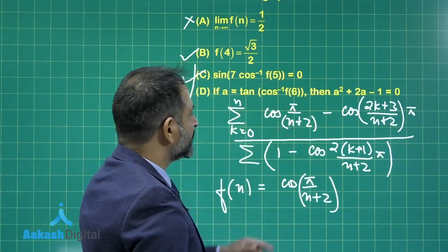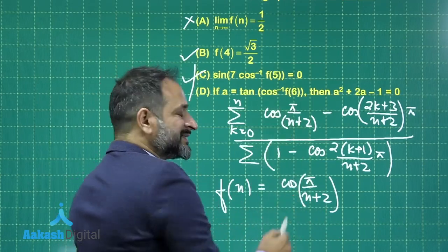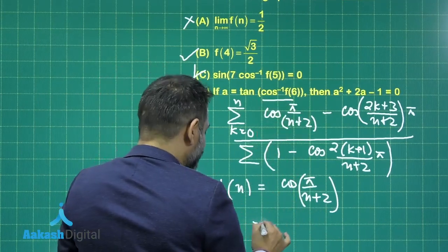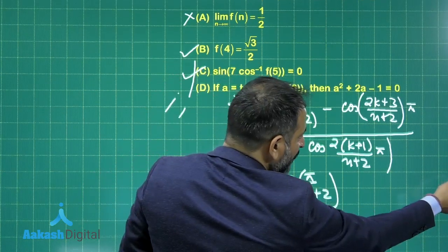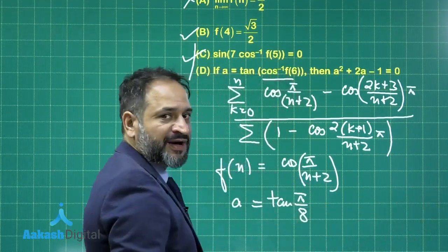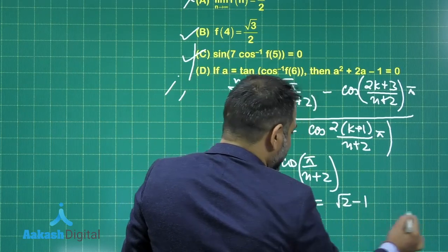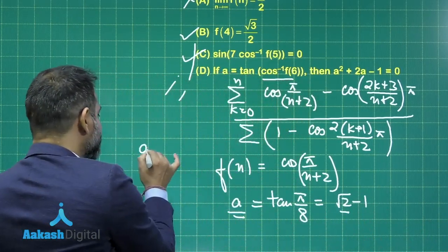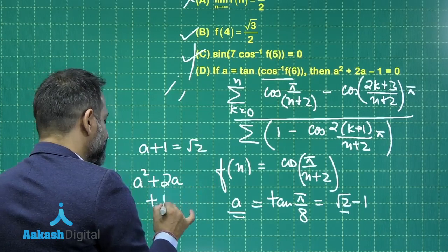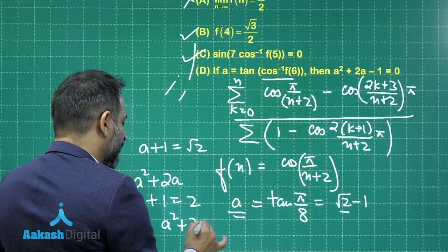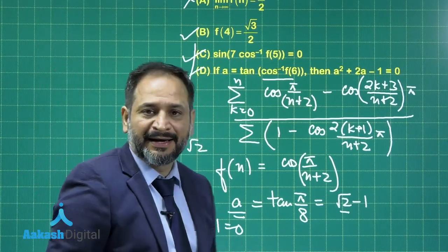Checking for the last option: f(6) — if you put n equals 6, it will be π/8. Then cos inverse of cos(π/8) gives π/8. So a will be equal to 10π/8, which is half of 45 degrees, that is 22.5 degrees. You can calculate this value: it will be √2 minus 1. Now, eliminating √2, if a + 1 = √2 and you square it out, a² + 2a + 1 = 2, which gives a² + 2a minus 1 = 0. So option D is also the correct option.